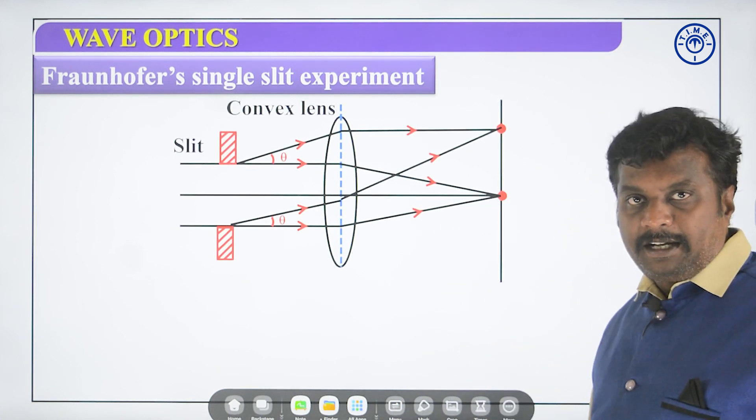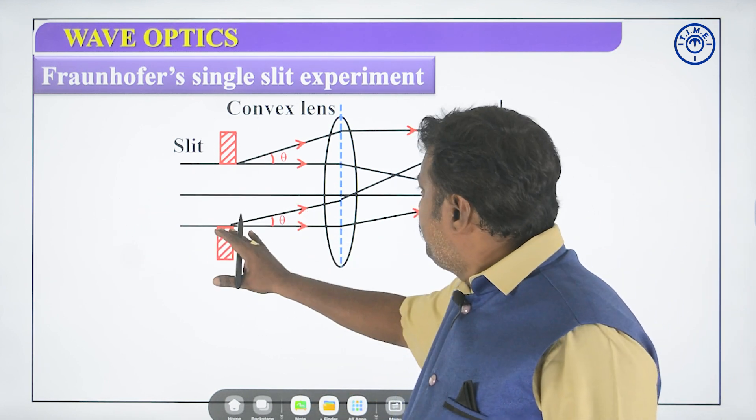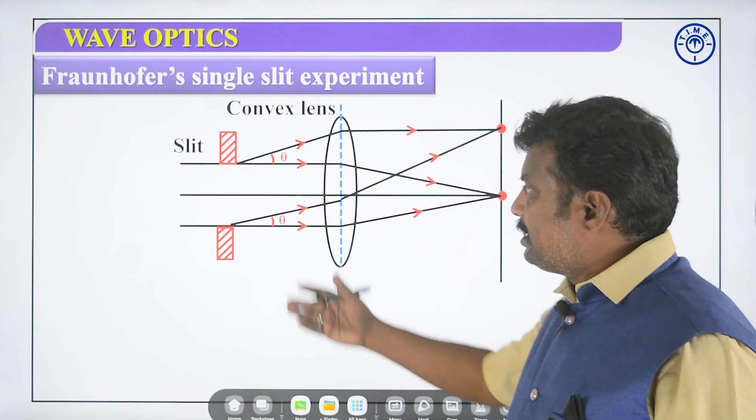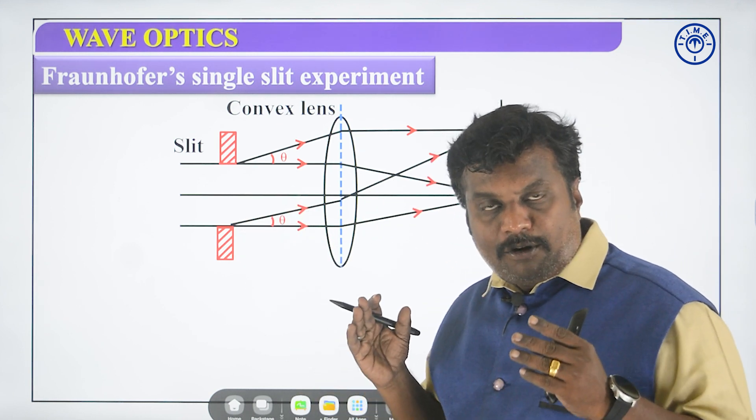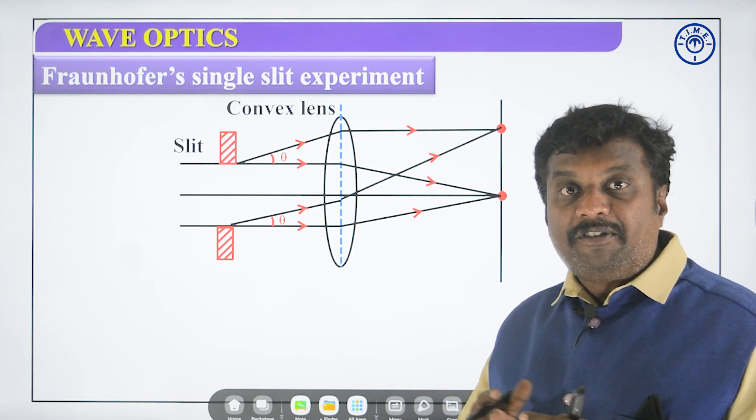So Fraunhofer single slit experiment consists of the following things: you need to have a source, okay, slit, convex lens, and a screen. The source and the screen has to be at infinite distance.